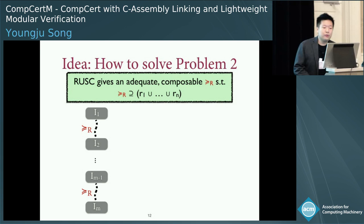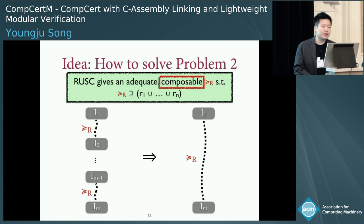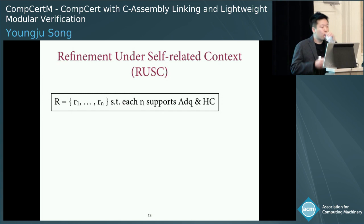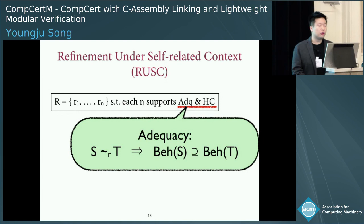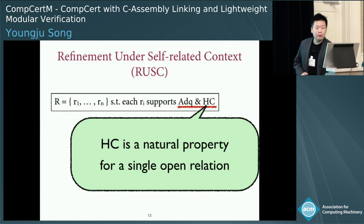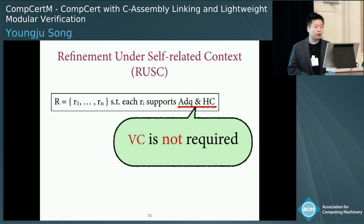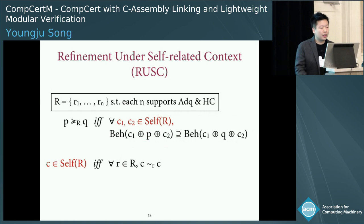Now recall the second problem: even with a single relation, open simulations are hard to compose vertically. However, for the RUSC relation, this is not a problem at all because it is trivially transitive by definition. Now I will show you how we define the RUSC relation. Suppose we have a set of independent relations R1 to RN, each of which satisfies adequacy and horizontal compositionality. Here, adequacy means that related programs have behavioral refinement. Horizontal compositionality between the same open relation is a very natural property that straightforwardly holds because it imposes the same invariant on the memory. It is important to note that we do not require the problematic vertical compositionality for the relations.